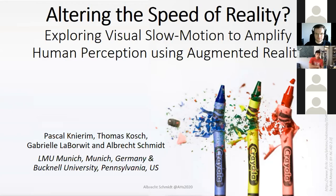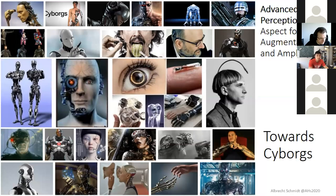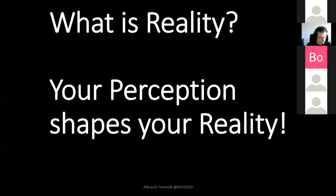What was our motivation for doing that? We're quite excited about the notion of a cyborg — the idea of extending the human body. If you look at fiction as well as research, perception is a key thing. Very often we think of cyborgs as beings that have an advanced perception. Our question was: what does it take to create a new perception, and how does this link to reality?